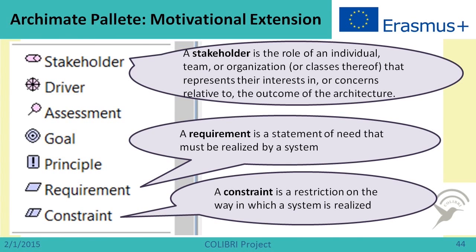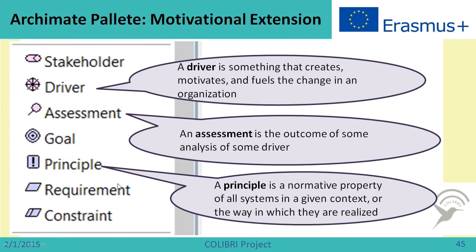The Archimate language also has extensions. The three layers — business, application, and technology — form the core of the language, but it also has extensions. One is the motivational extension, which has elements relating to the business model: stakeholders, requirements, constraints, goals, drivers, and principles. Principles are normative properties of all systems in a given context or the way in which they are realized, good for stating specific constraints or compliance rules.